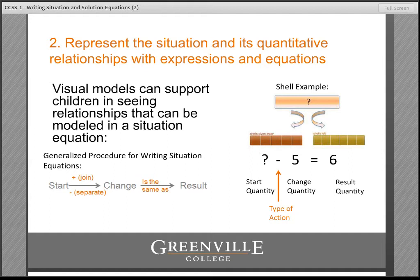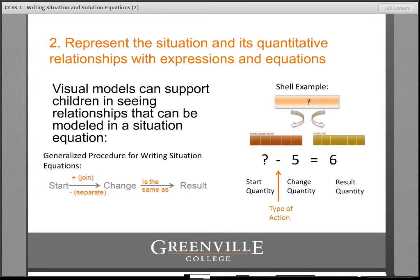The problem was: John gave five shells to his friend and he had six shells left over. How many shells did John have at first? We can draw a model showing he had some shells to begin with — a question mark, because we don't know how many. Of that amount, five were given away and six were left over. So we begin with our start quantity, which is a question mark. The action is take-from, so we use a minus sign, then indicate the five shells given away, and this equals the result quantity of six left over. So the situation equation is: ? − 5 = 6.